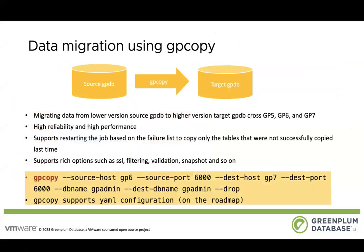GPCopy provides a high performance way to copy data between two Greenplum databases. It is very useful for migrating data from a lower version GPDB to a higher version GPDB. GPCopy helps you with data copy as well as metadata copy. If you already have data in the target database, GPCopy provides options for you to choose whether to keep them or drop the tables directly. You can specify a table list in a file to filter among the tables, and you can also restart a job based on the failure list to copy only the tables that were not successfully copied last time. Options like SSL and Snapshot are also supported. A YAML configuration will be supported soon, so you can use YAML configuration files instead of writing a long command line.